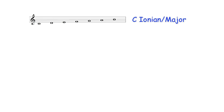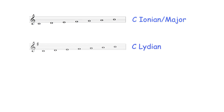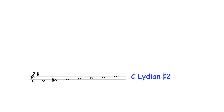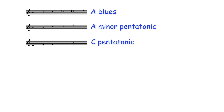The scalic or modal options for improvising over a C major 7th chord therefore include the C Ionian mode or C major scale, the C Lydian mode — the fourth mode of the G major scale — the C Lydian sharp II mode — the sixth mode of the E harmonic minor scale — and the following blues and pentatonic scales.